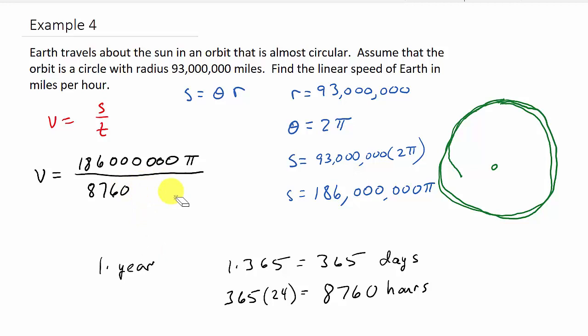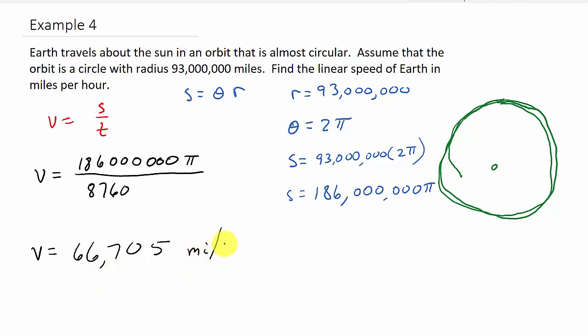Now, you could have got it in years and then converted it, and that's perfectly fine. But since they didn't give us the units, let's just go ahead and put what we need there. So we get the linear velocity, so 186 times π, and then we'll divide that by 8,760. And we get, and I'm just going to round it. I'm not going to put any decimals. So 66,705, and that would be miles per hour.